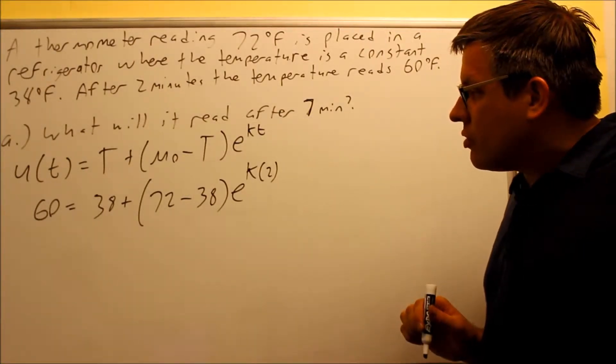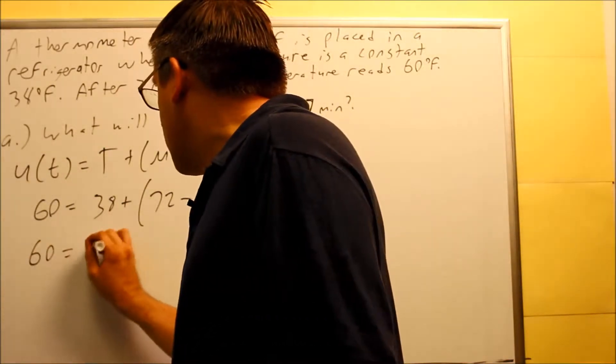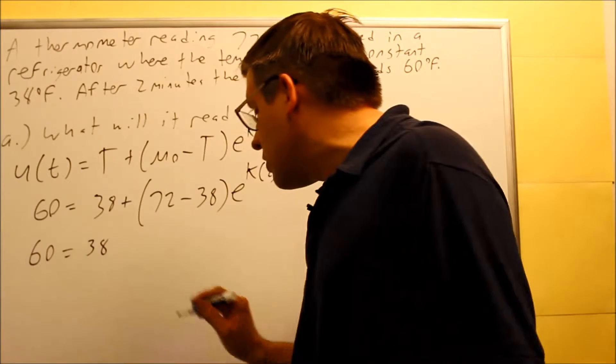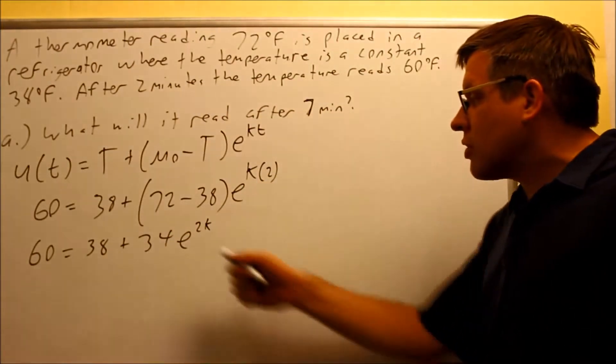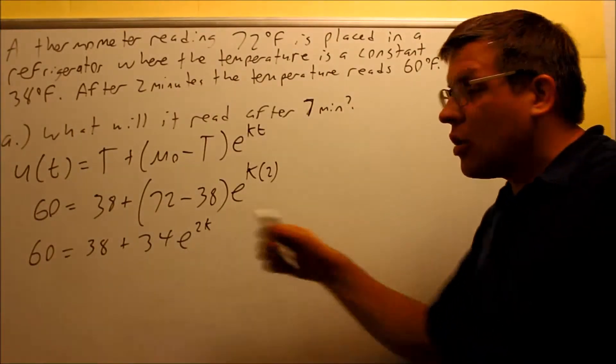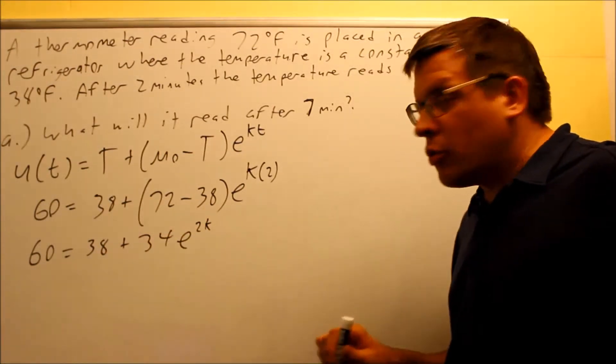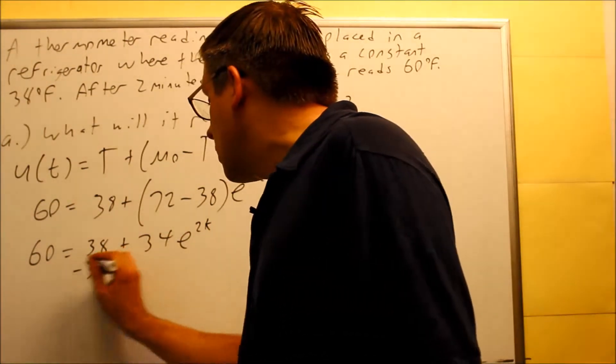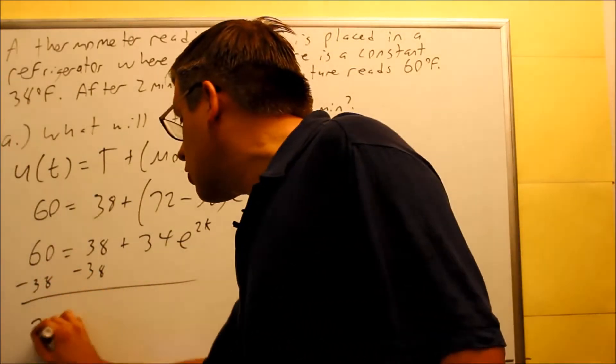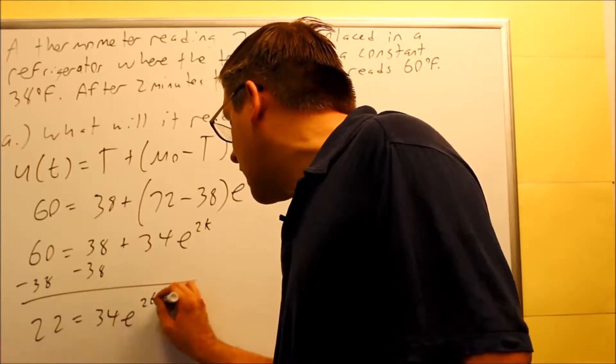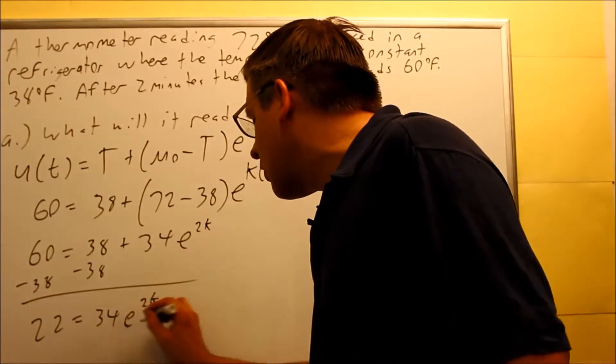Now we need to simplify this. We're going to simplify inside the parentheses: 60 equals 38, and then it's going to be plus 34e^(2k), so 72 minus 38 gives you 34. We need to solve for the k value. We want to subtract 38 from both sides. We're going to get 22 equals 34e^(2k).